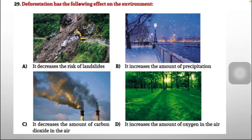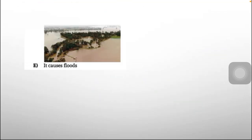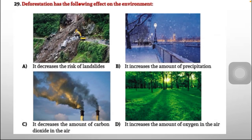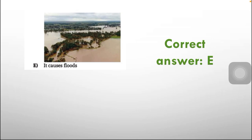Question 29: Deforestation effects on the environment. Options: A) decreases risk of landslides; B) increases precipitation; C) decreases CO2 in the air; D) increases oxygen; E) causes floods. Deforestation does not decrease but increases the risk of landslides. It also decreases precipitation, not increases. It doesn't decrease CO2 — it increases it. The only correct option remaining is E — deforestation causes floods.